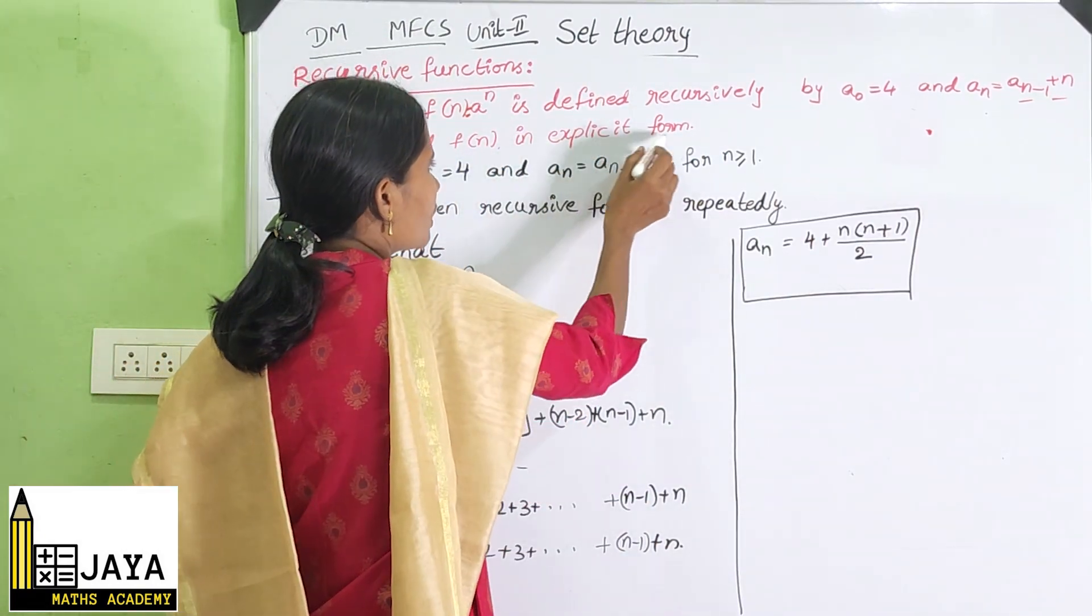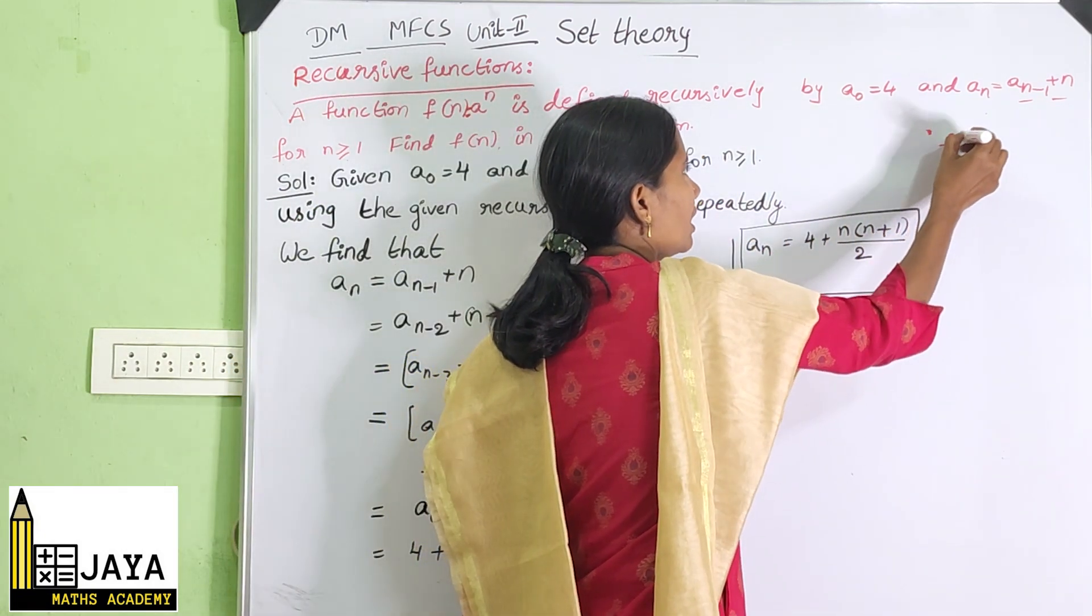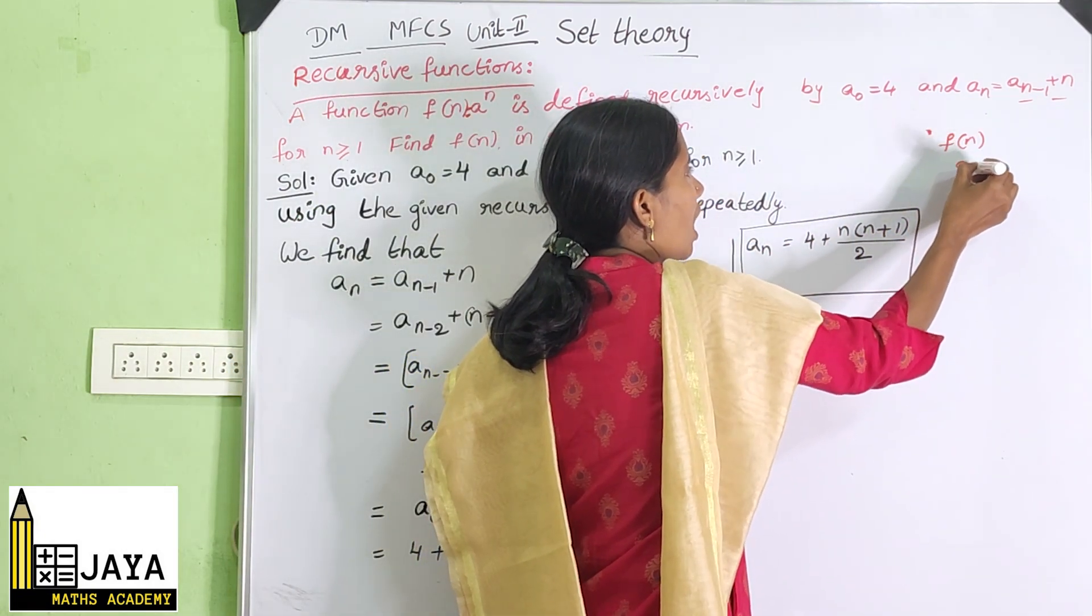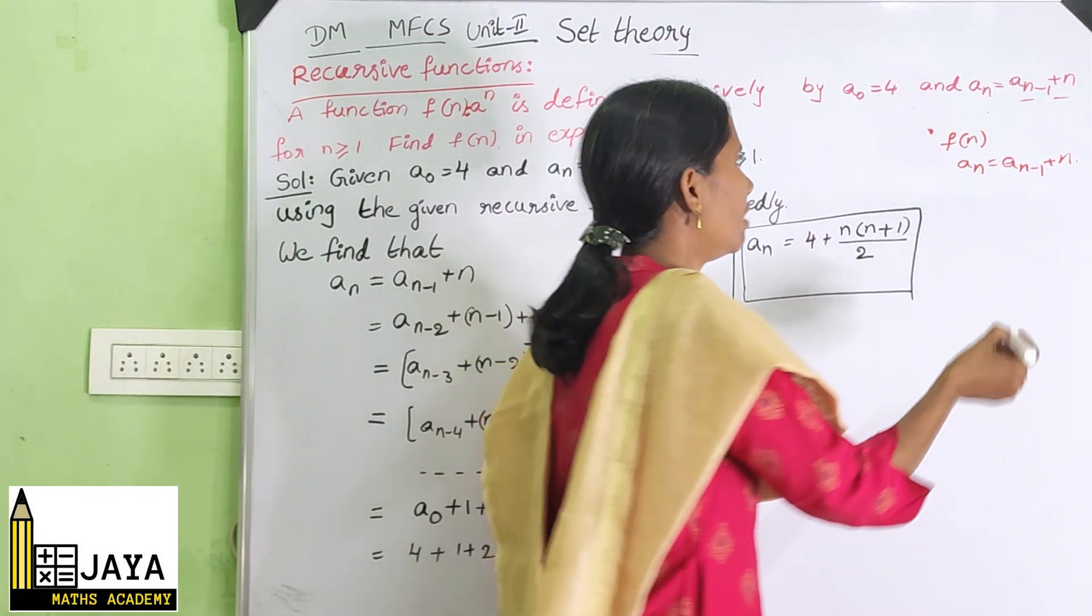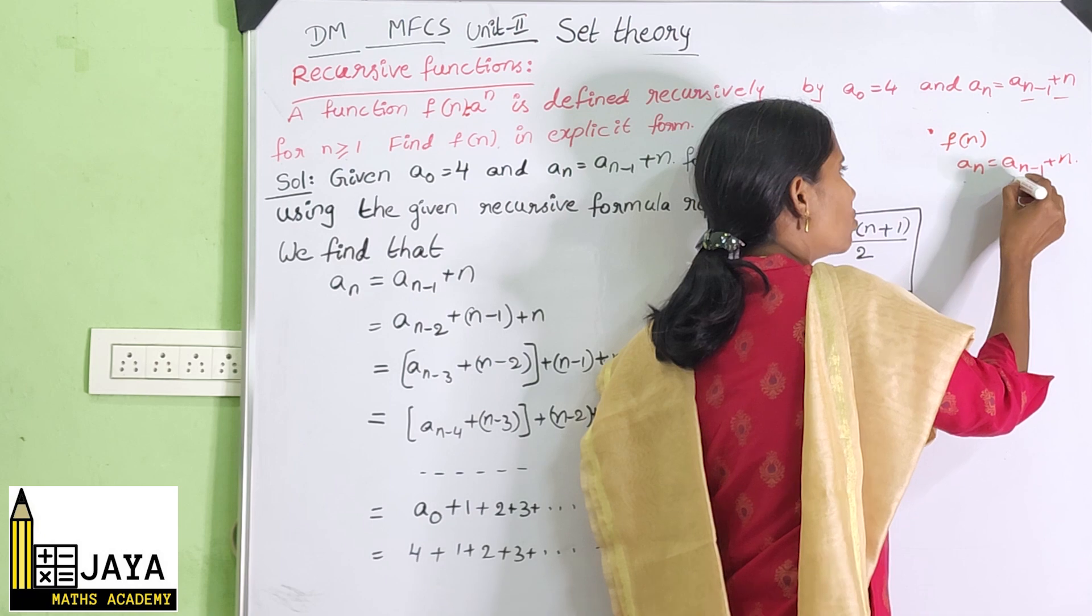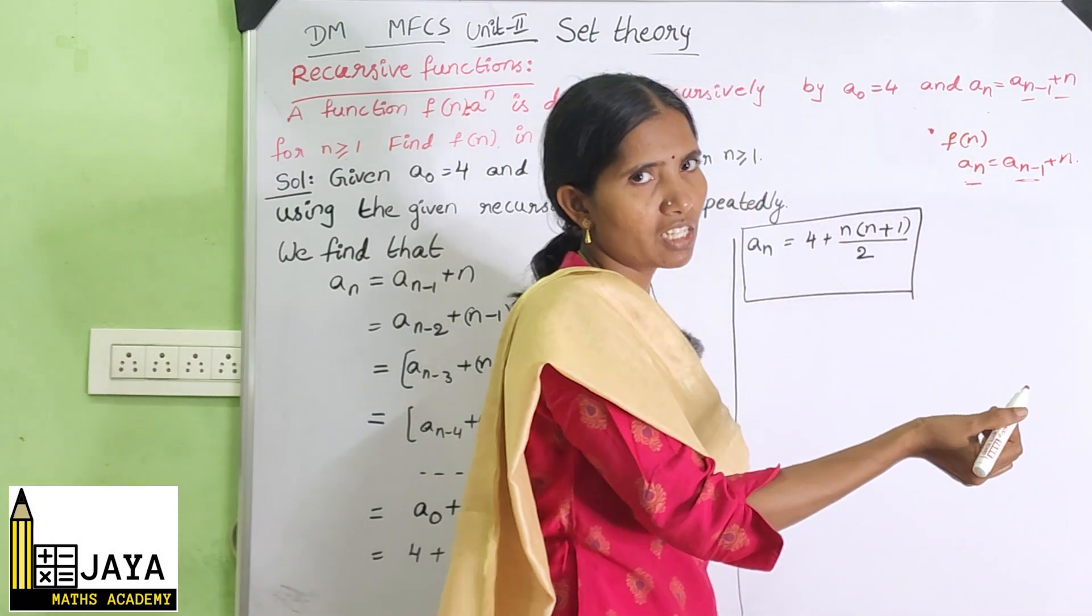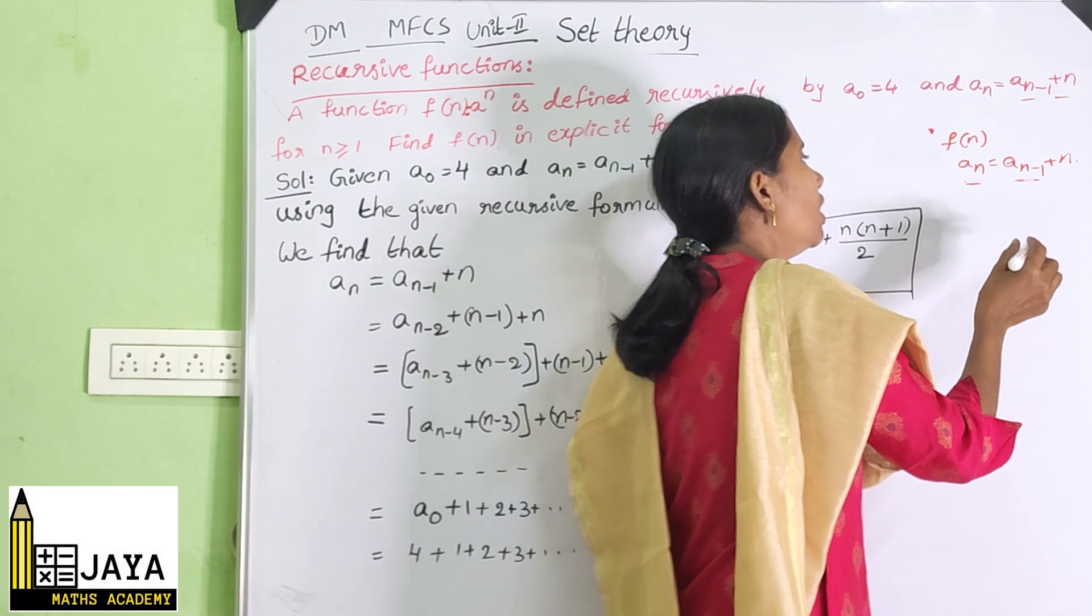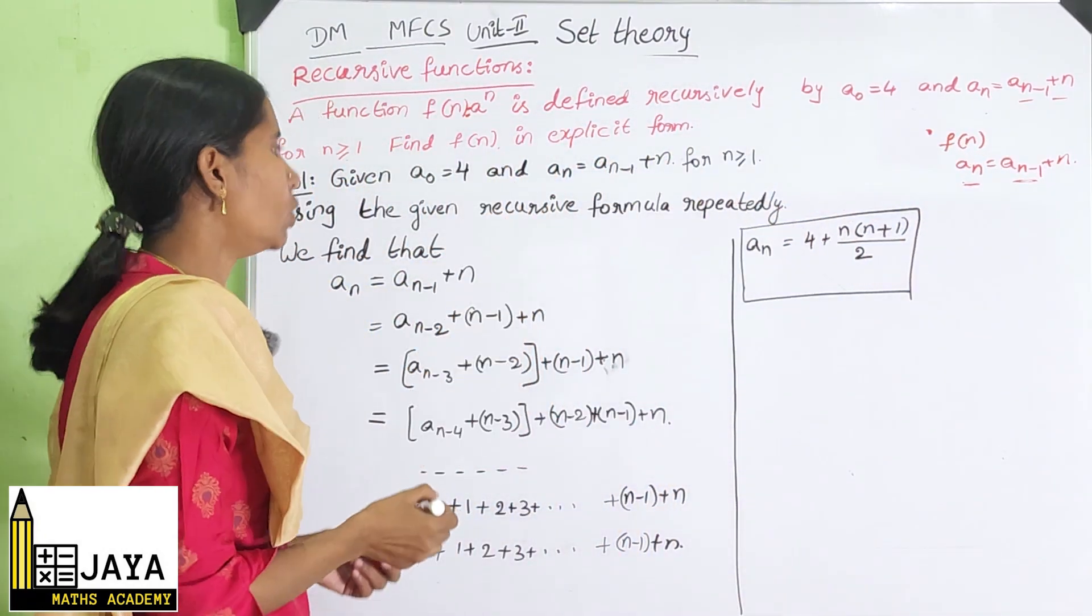So here we can see F(n) in the recursive form. How we can say A(n) = A(n-1) + n, so A(n) value depends on A(n-1), A(n-1) value depends on A(n-2), likewise. It is a recursive formula, so we can convert this into explicit form.